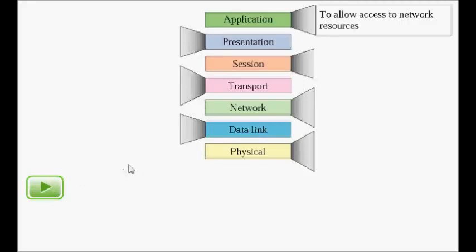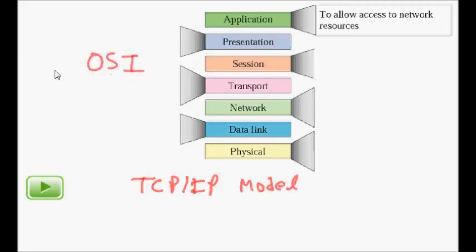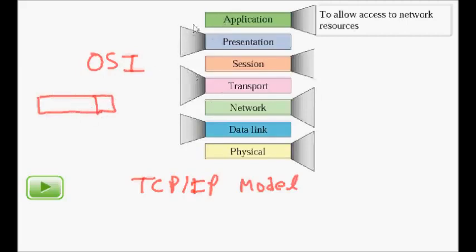In our next class we will learn about the TCP/IP model. To summarize today's lecture, we covered three key things: encapsulation — where data and header from an upper layer become data for the lower layer; layered architecture — where each layer provides a service to the one above it; and the concept that upper layers use the services of the lower ones. Thanks a lot.